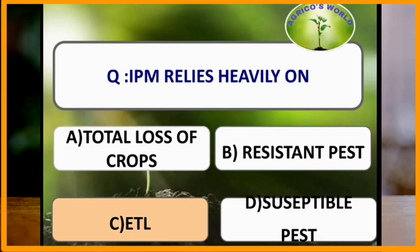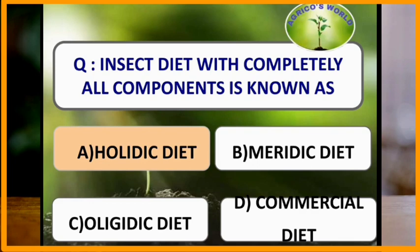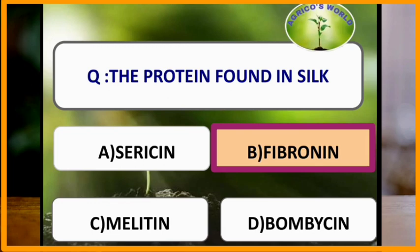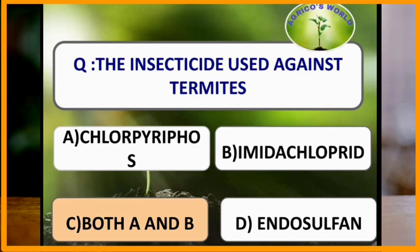Integrated pest management relies heavily on economic threshold level. An insect diet with all completely defined components is known as a holidic diet. The protein found in silk is fibroin protein.